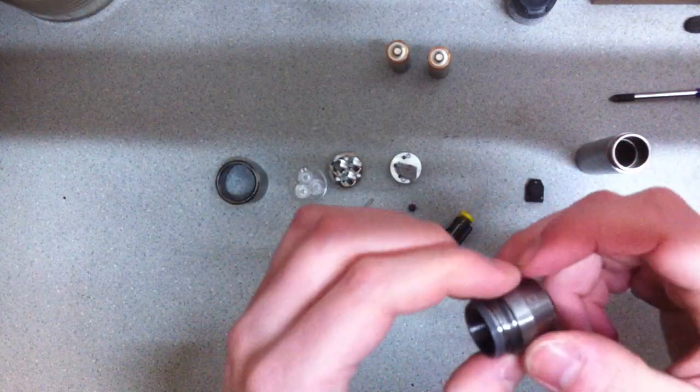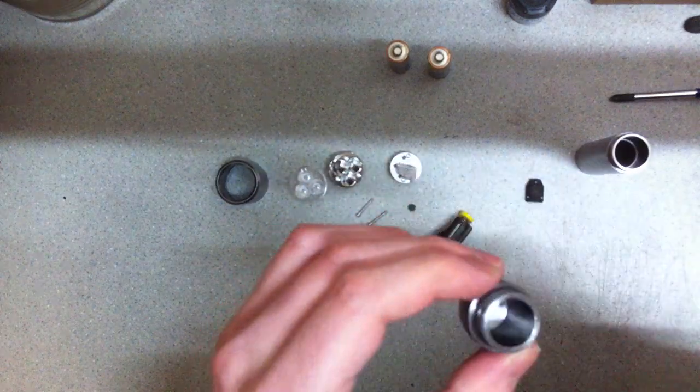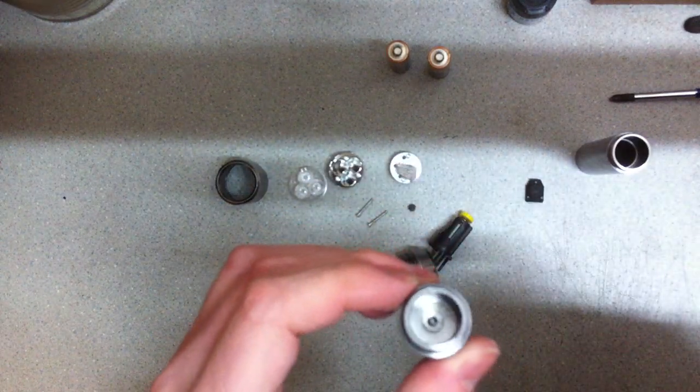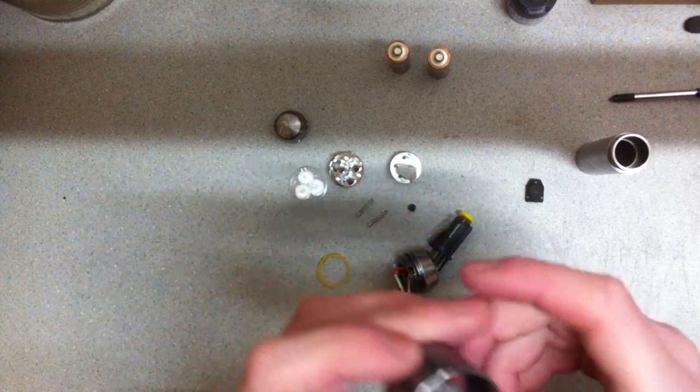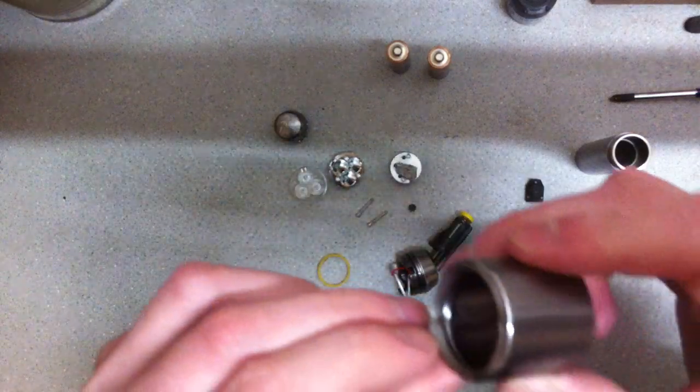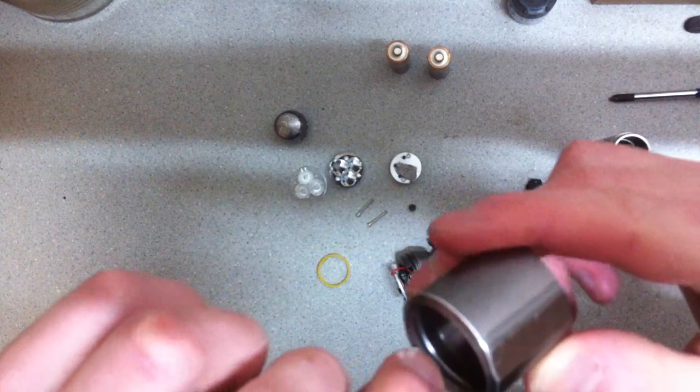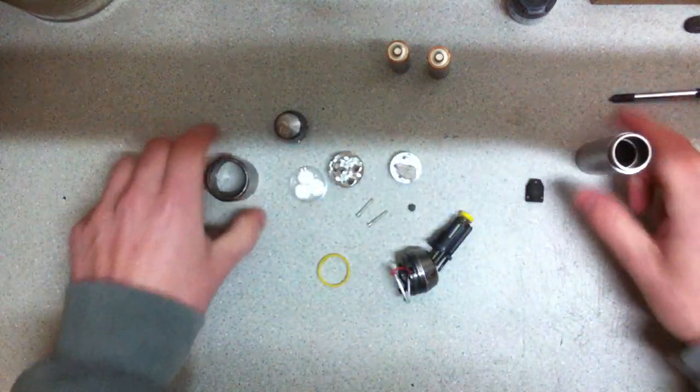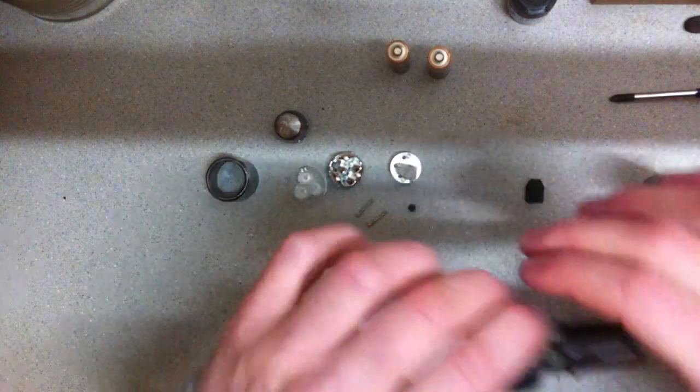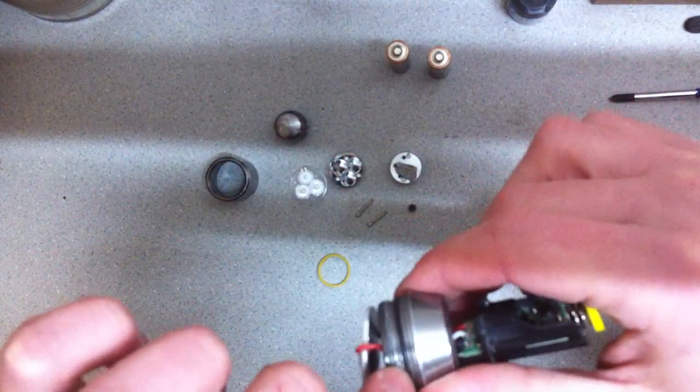There are a few o-rings on the flashlight. No spring here. The outer o-ring is right here, and one right here.